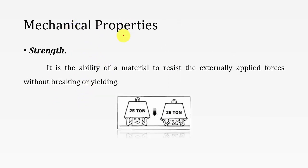Then mechanical properties — these are very important for selecting any material for mechanical applications. Strength is the ability of the material to resist externally applied forces without breaking or yielding. In the first image a 25-ton load is applied on a metal and it is not deformed, while in the second image the metal deforms. So for all applications the material should be of high strength.